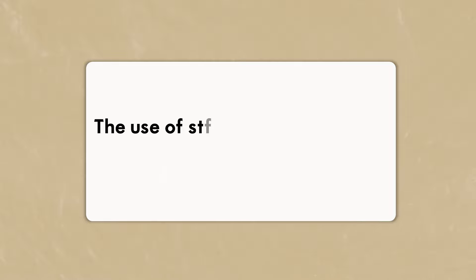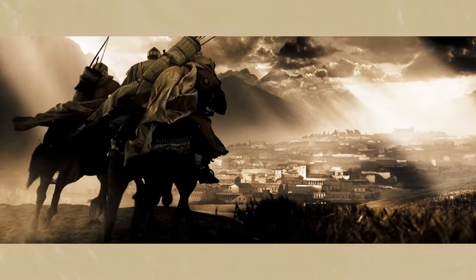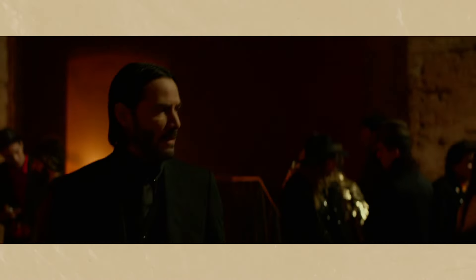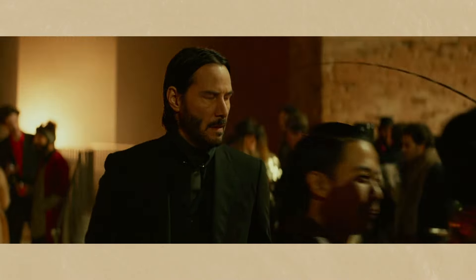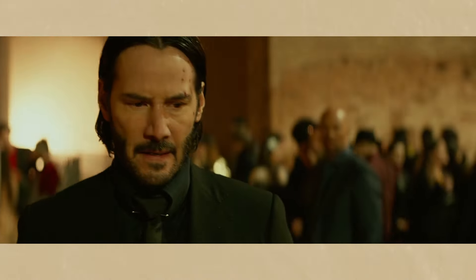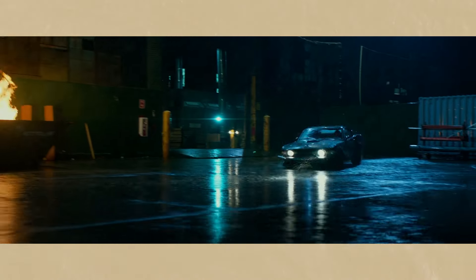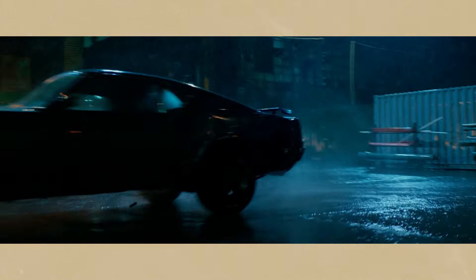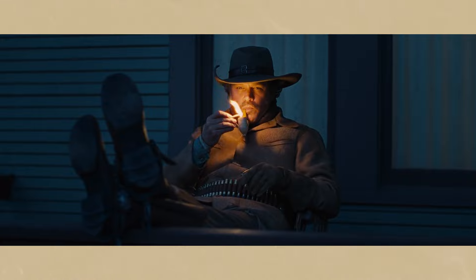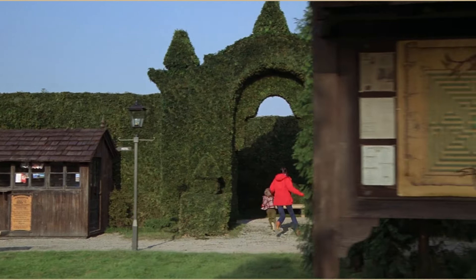The use of static versus dynamic shots is not mutually exclusive. Filmmakers often combine the two techniques to create a rich and visually engaging experience. For instance, a static shot of a character's face may be followed by a dynamic tracking shot as they walk through a crowded market, highlighting their emotional state and their journey through the bustling environment. The choice depends on the filmmaker's vision; by understanding the strengths and limitations of each technique, filmmakers can create a powerful visual narrative that immerses the audience in the story.